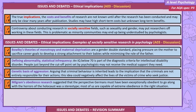Examples of socially sensitive research in psychology: Bowlby's theories of monotrophy and maternal deprivation are a gender double standard, placing pressure on mothers to sacrifice career goals to develop a strong attachment with their babies while minimising the role of the father. Defining abnormality by statistical infrequency — an IQ below 70 is part of the diagnostic criteria for intellectual disability disorder, meaning people just beyond the cut-off may not receive the support they need. The genetic basis of aggression implies criminals are not entirely responsible for their actions, which could negatively affect victims seeking justice. Milgram's obedience research suggested that most of us are capable of extreme obedience in the right situation, overturning the stereotype that only certain groups were exceptional in their compliance.